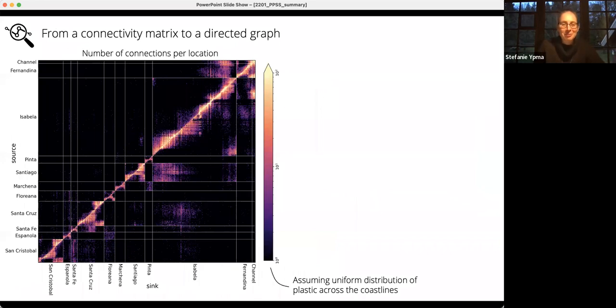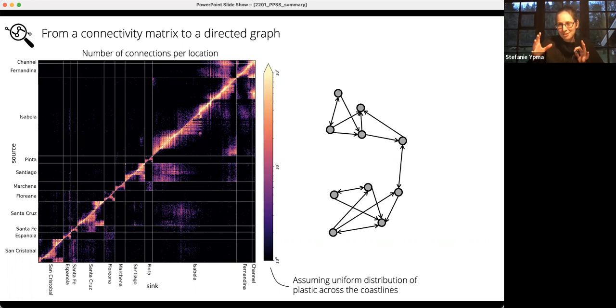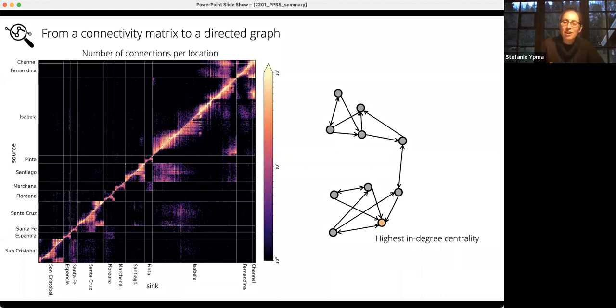Then we can take it even one step further. Now we're getting into the network theory. So I'm getting really excited, as you can notice. For all these locations, we can have a look at how what their connection is and how strong that connection is. This is a transition matrix and you can translate that into this graph. Basically, every arrow tells you whether a piece of plastic will move from A to B or whether it will move from B to A. Using this, you can apply network theory and you have different versions or different centralities, as we call them. They all do something different or calculate something different. But our main goal here is to pinpoint whether a location is important for cleanup, yes or no.